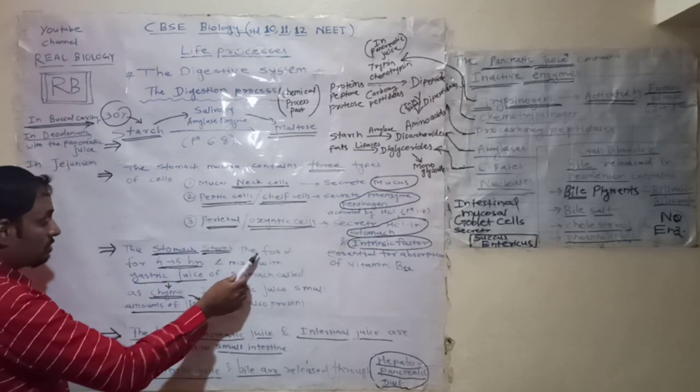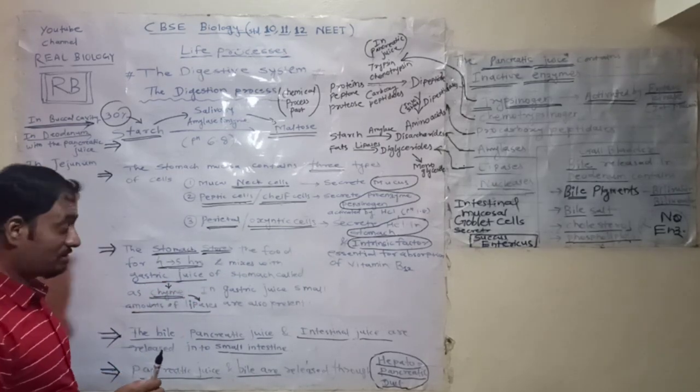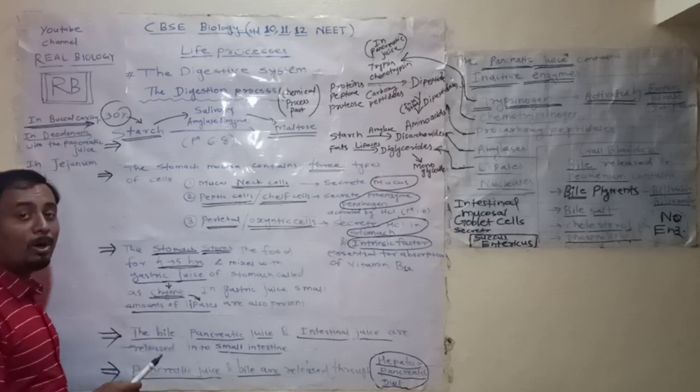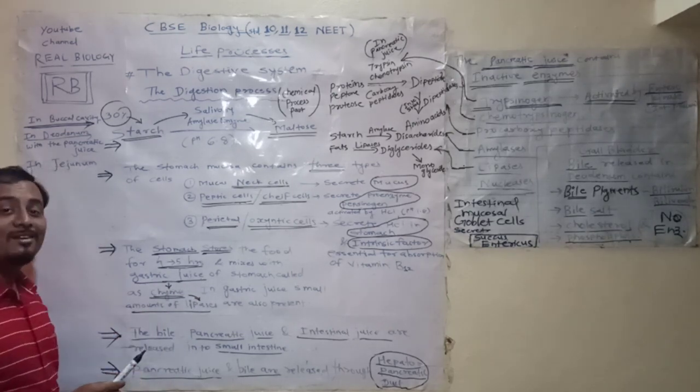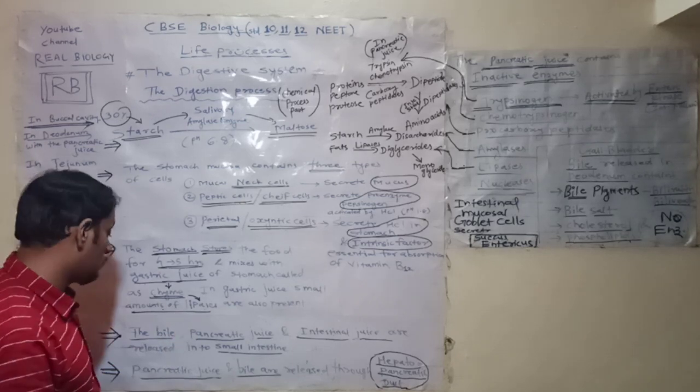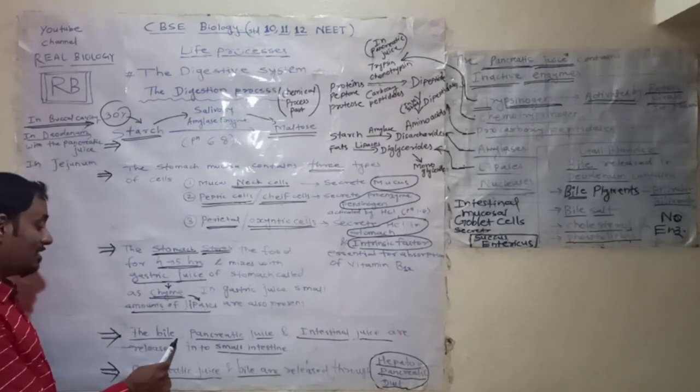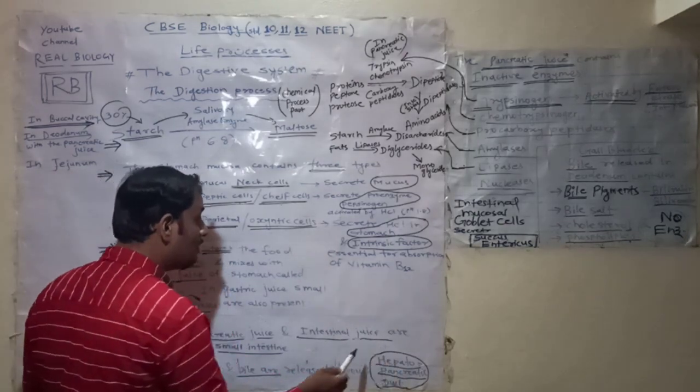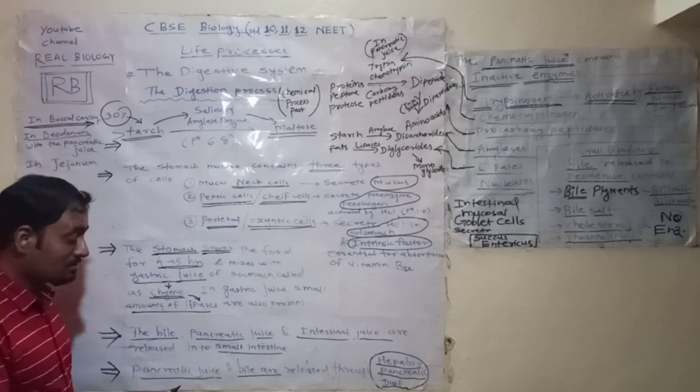Next, the stomach stores the food for 4 to 5 hours and secretes gastric juice which is a mixture of various enzymes. It also contains small amounts of lipases. Next kind of secretions are the bile, pancreatic juice, and intestinal juice. These are released into the small intestine.